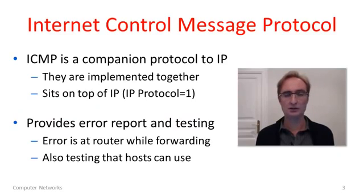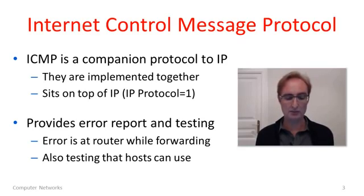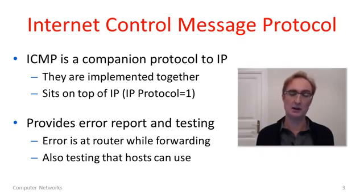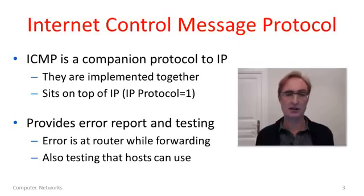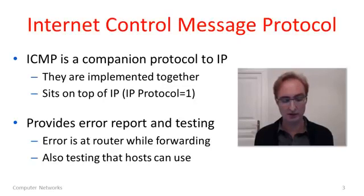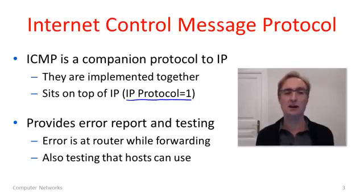IP handles the various kinds of error reporting and connectivity problems with a protocol called ICMP — that stands for Internet Control Message Protocol. It's what's called a companion protocol to IP; IP and ICMP are always implemented together. ICMP messages are actually carried inside IP packets, so ICMP as a protocol sits on top of IP. You can tell this if you look at an IP packet and the protocol number is set to 1 — that IP packet is carrying an ICMP message.